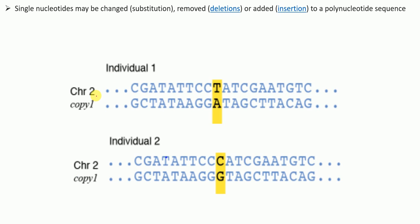Now let's look at an example comparing two individuals — individual one and individual two — examining chromosome 2. This is the nucleotide sequence in chromosome 2 for each individual. Comparing the two, all the sequence is the same except the part highlighted in yellow. Between individual one and individual two, there is a variation at a single nucleotide position: individual one has a T, while individual two has a C. T bonds with A and C bonds with G.